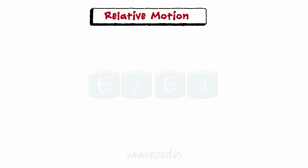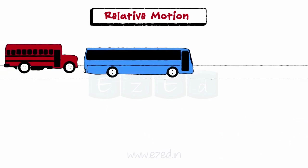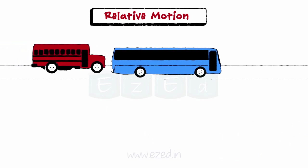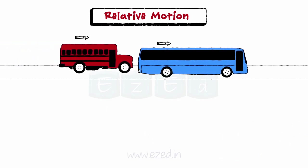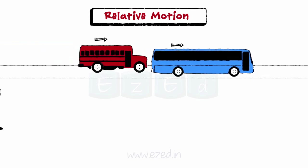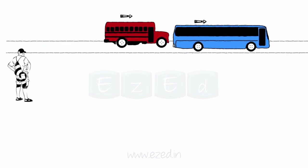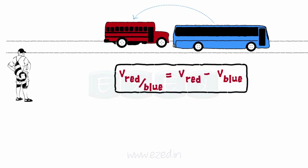Again, consider the two buses — the red bus and the blue bus — traveling on a straight highway, but now both buses are moving in the same direction, that is, parallel to each other. An observer is watching the buses. Here, the velocity of the red bus is positive and the velocity of the blue bus is also positive. So the relative velocity of the red bus with respect to the blue bus is given by the following equation.